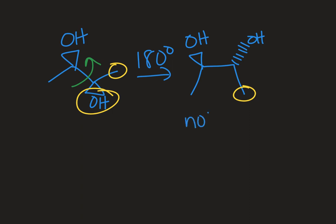So this is not a meso compound because it doesn't have a plane of symmetry down the middle of it. So this would be a chiral molecule with chiral stereocenters.